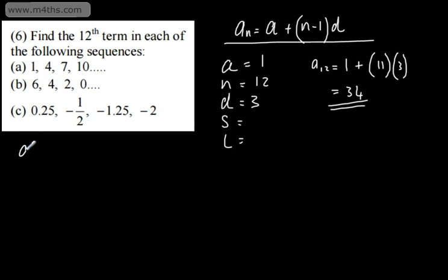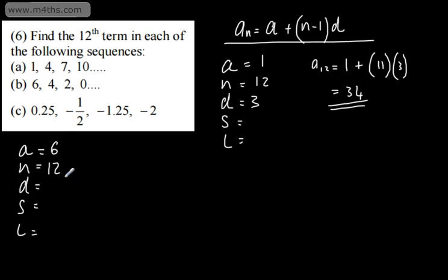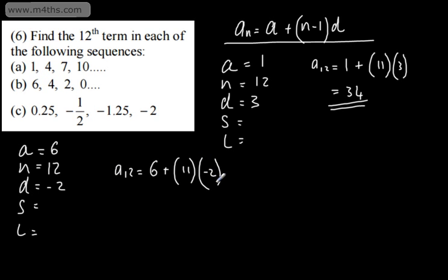Next sequence: a equals 6, n equals 12. The sequence goes 6, 4, 2, 0, so the common difference is negative 2. So a12 equals 6 plus 11 times negative 2, giving us negative 22 plus 6, which is negative 16. The 12th term is negative 16.